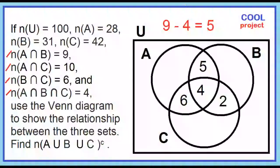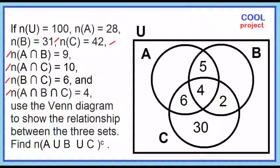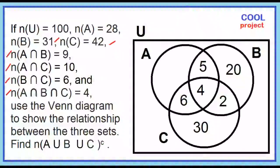The cardinality of set C is 42. Since we already have 12, 42 minus 12 is 30. The cardinality of set B is 31. Since we already have 11, 31 minus 11 is 20. The cardinality of set A is 28. Since we already have 15, 28 minus 15 is 13.